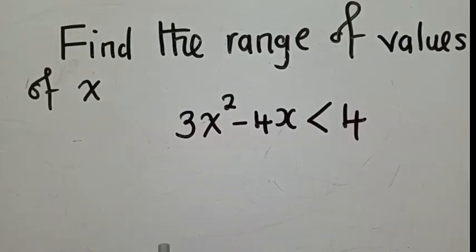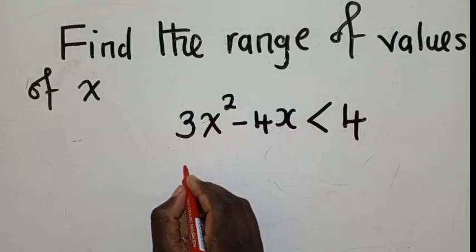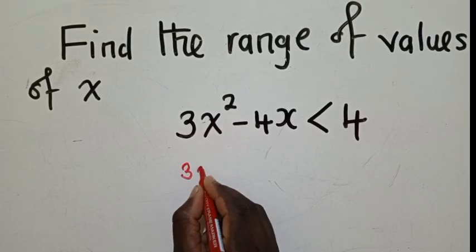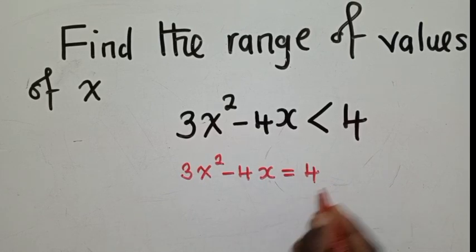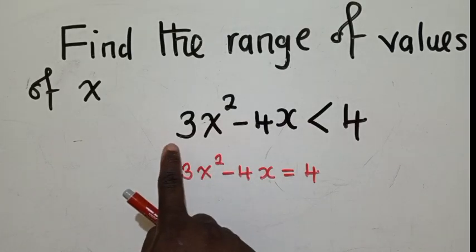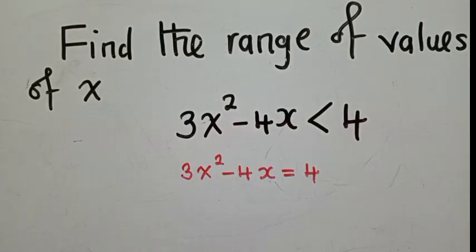Find the range of values of X. This is an inequality, not an equation — it's an inequality because of this sign over here. When it comes to solving, the procedure and method must be the same as how you solve a quadratic equation. The only difference will be at the end after finishing solving. That's where it will differ, but the steps must be the same.